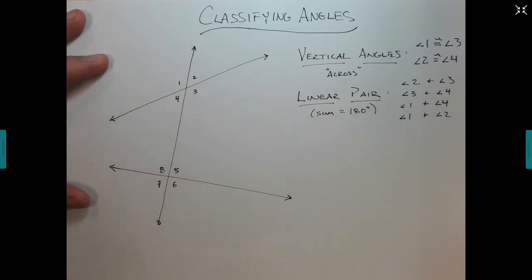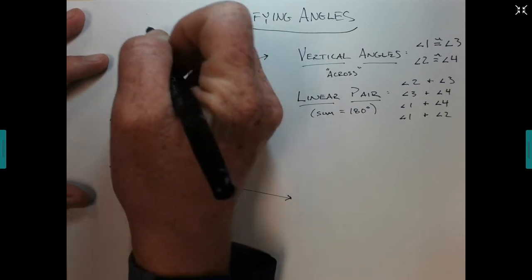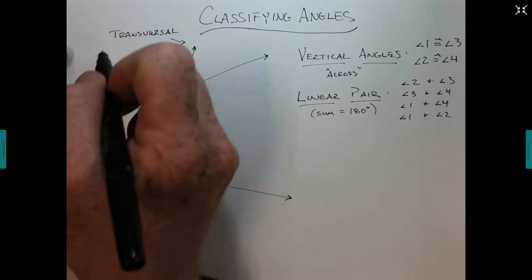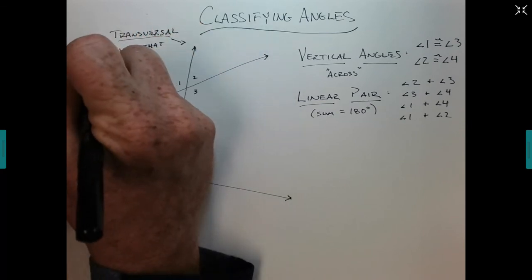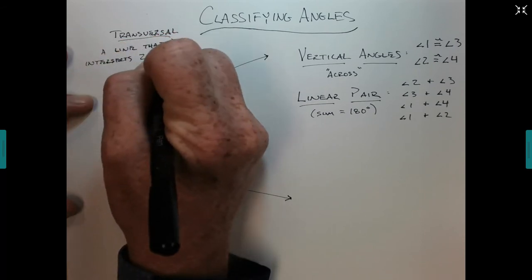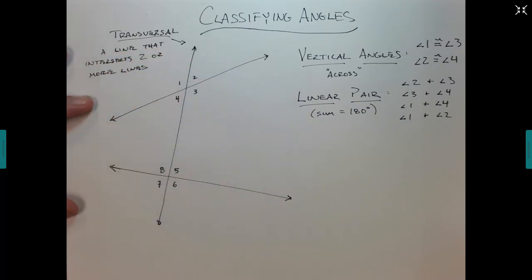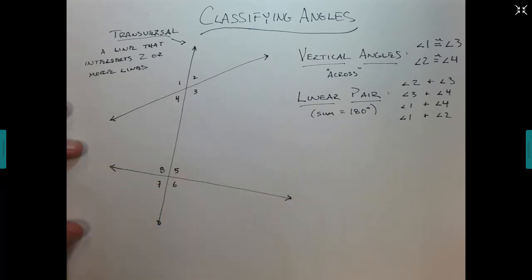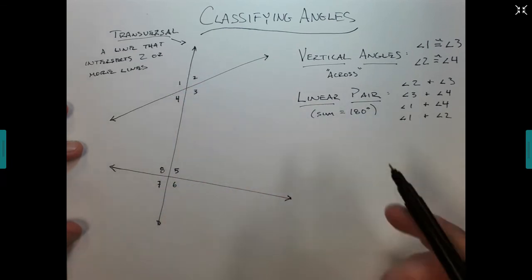Here's some vocabulary. This line connecting the two groups is called a transversal. A transversal is simply a line that intersects two or more other lines. That word transversal is going to be on your test. The other two lines are not transversals because they only intersect one line. So the transversal connects two groups, and we're going to classify those angles by comparing one from each group.